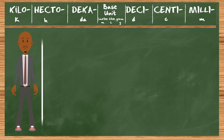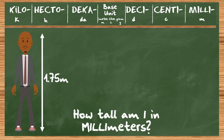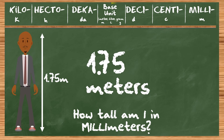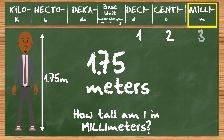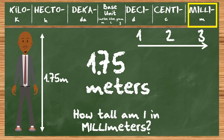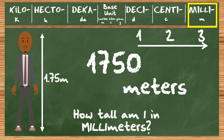I'm 1.75 meters tall. How tall am I in millimeters? So we look at our line of prefixes. Where are we starting on this line? I don't see meters on this line anywhere. Well, that's because we're starting at the base unit. Meters is the base unit, just like liters and grams. How far away from the base unit is milli? Milli is one, two, three spaces to the right. Awesome. So let's move our decimal three spaces to the right, and then we'll fill in these empty spaces with zeros. So you're 1,750 millimeters tall.